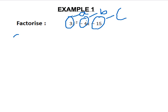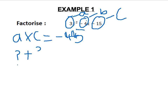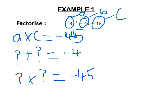Therefore we do A times C, and in this example it is minus 45. We then find two numbers that added together make minus 4, which is our B, and two numbers multiplied together which equals minus 45. These two numbers are minus 9 and plus 5.